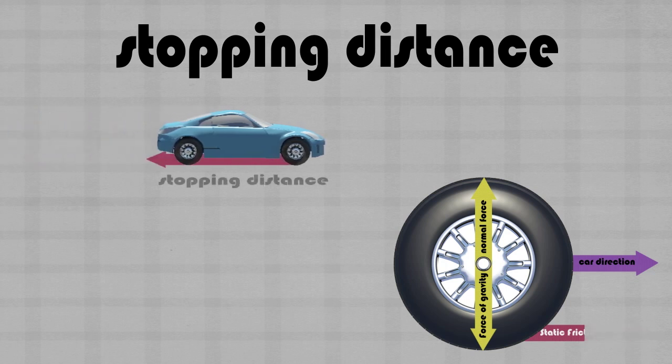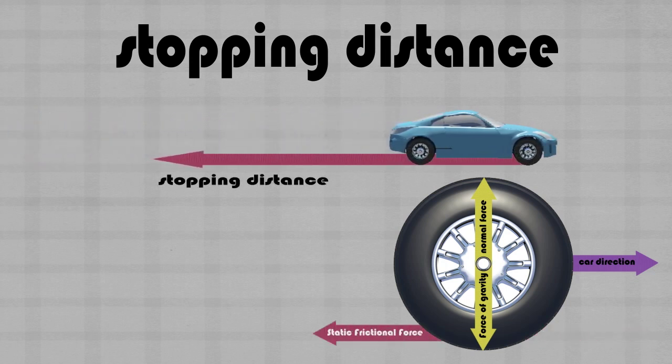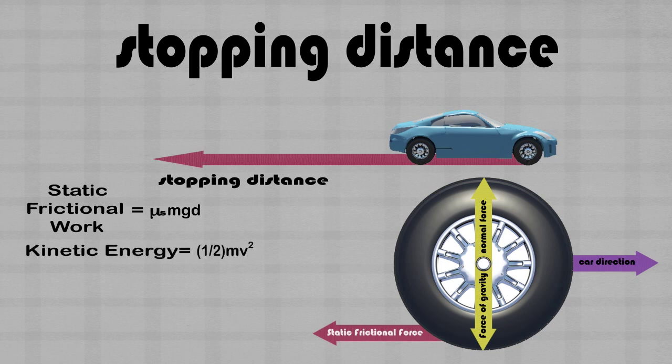Notice that as the brakes are applied the direction of the static frictional force is reversed. Using energy and work equations we can easily derive an equation for the stopping distance. We know that the static frictional work is equal to the static frictional force times the distance the car travels, and that the kinetic energy of the car is one-half mv squared. We can say that the kinetic energy of the car is equal to the static frictional work. This is because enough work must be done to reduce the car's kinetic energy to zero.